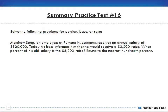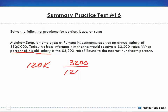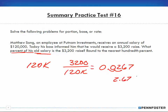Number 16: Matthew Song, an employee at Putnam Investments, receives an annual salary of $120,000. His boss informed him he would receive a $3,200 raise. What percent of his old salary is the $3,200 raise? I divide $3,200 by $120,000, which gives me 0.0267, or 2.67%.